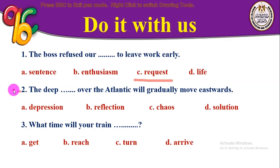Number two: 'The deep _____ over the Atlantic will gradually move eastwards.' The choices are depression, reflection, chaos, or solution. A depression can be used for land or air — in weather, a deep area of low pressure is called a depression. The correct answer is depression — 'The deep depression over the Atlantic will gradually move eastwards.'